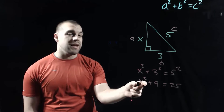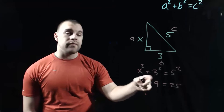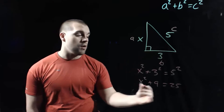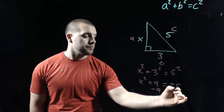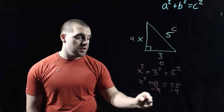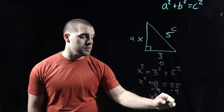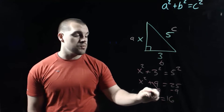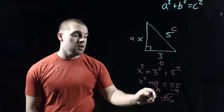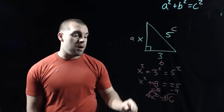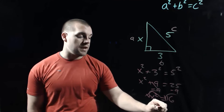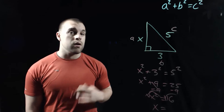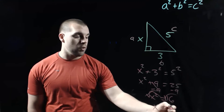In order to solve this, we need to get X all by itself. Right now we've got a plus 9, so we subtract that over to the other side. We end up with X squared equals 16. Our last step is to square root both sides to get rid of that squared power. The squared and square root cancel out, giving us X equals the square root of 16, which is 4.